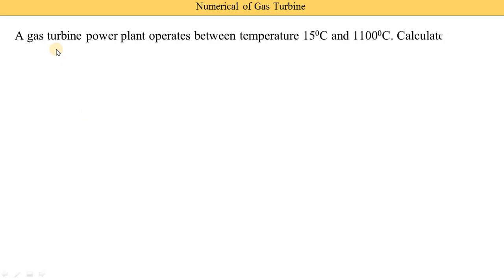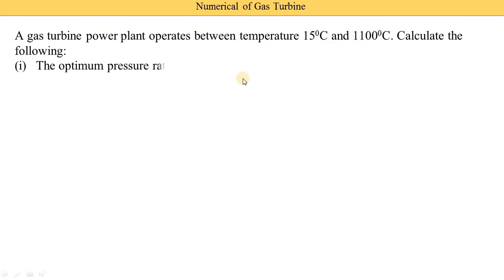A gas turbine power plant operates between temperatures 15 degrees centigrade and 1100 degrees centigrade, meaning T1 and T3 are given — the lowest and highest temperatures respectively. First, we calculate the optimum pressure ratio for the cycle for maximum power output, meaning we need to calculate the pressure ratio RP, or P2 upon P1.